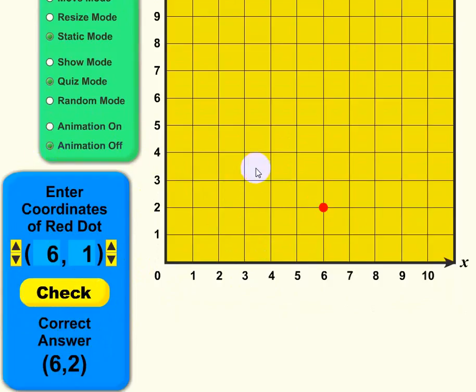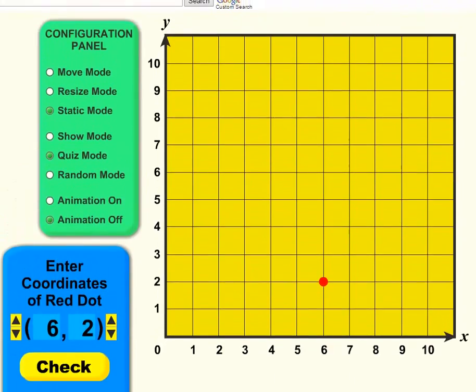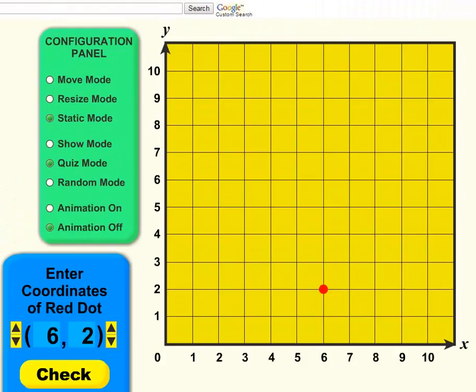If we turn the animation off, let's go ahead and pull again, six two and check, it just gives you a check mark, shows you that it's correct, and it doesn't do the animation. Let's go ahead and go back up, so that's how the quiz mode works.